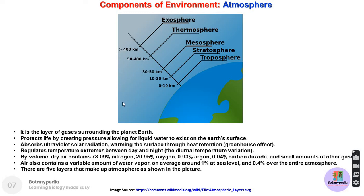There are five layers that make up the atmosphere. One very important point is that within the stratosphere, there is an ozone layer which protects us from harmful ultraviolet solar radiation. Ultraviolet radiation is harmful because if it reaches Earth's surface, it can damage DNA, leading to skin cancer. So the ozone layer in the stratosphere protects us from the harmful effects of UV light.